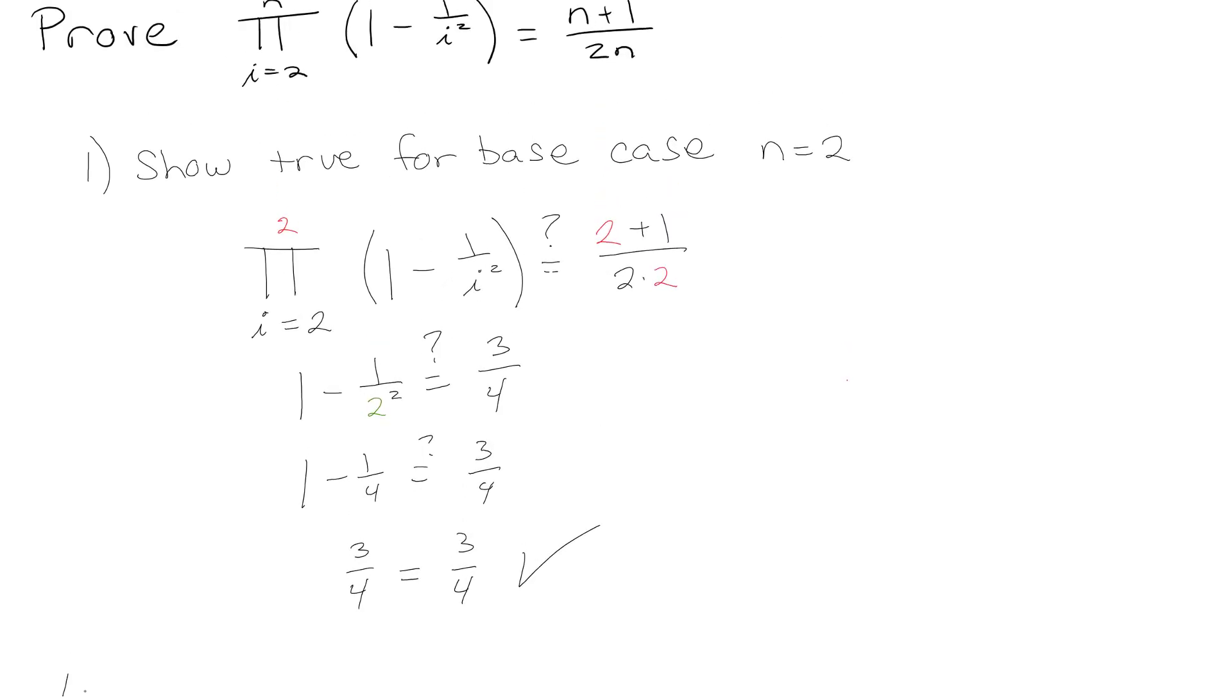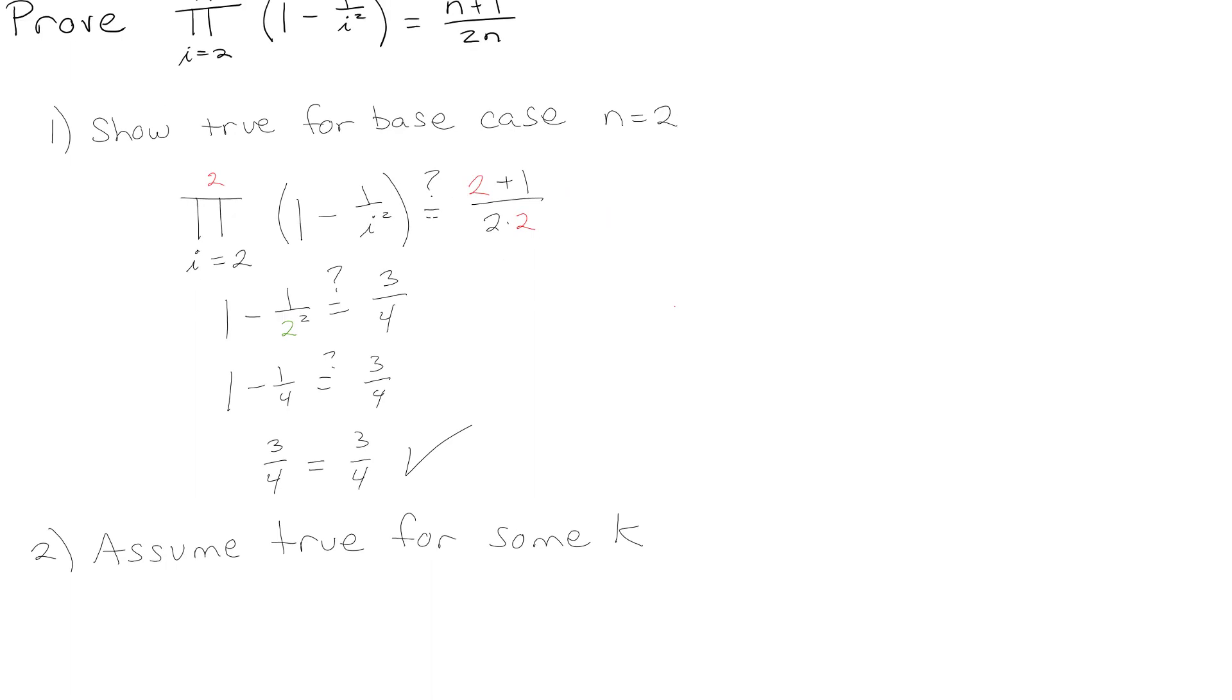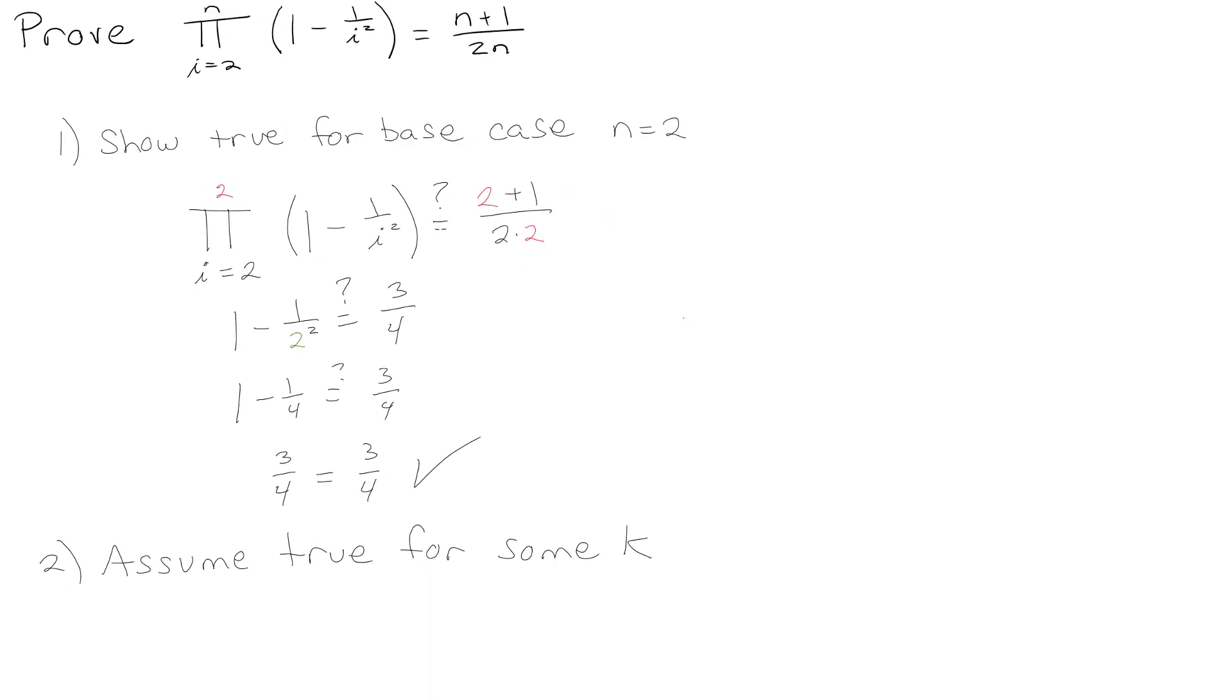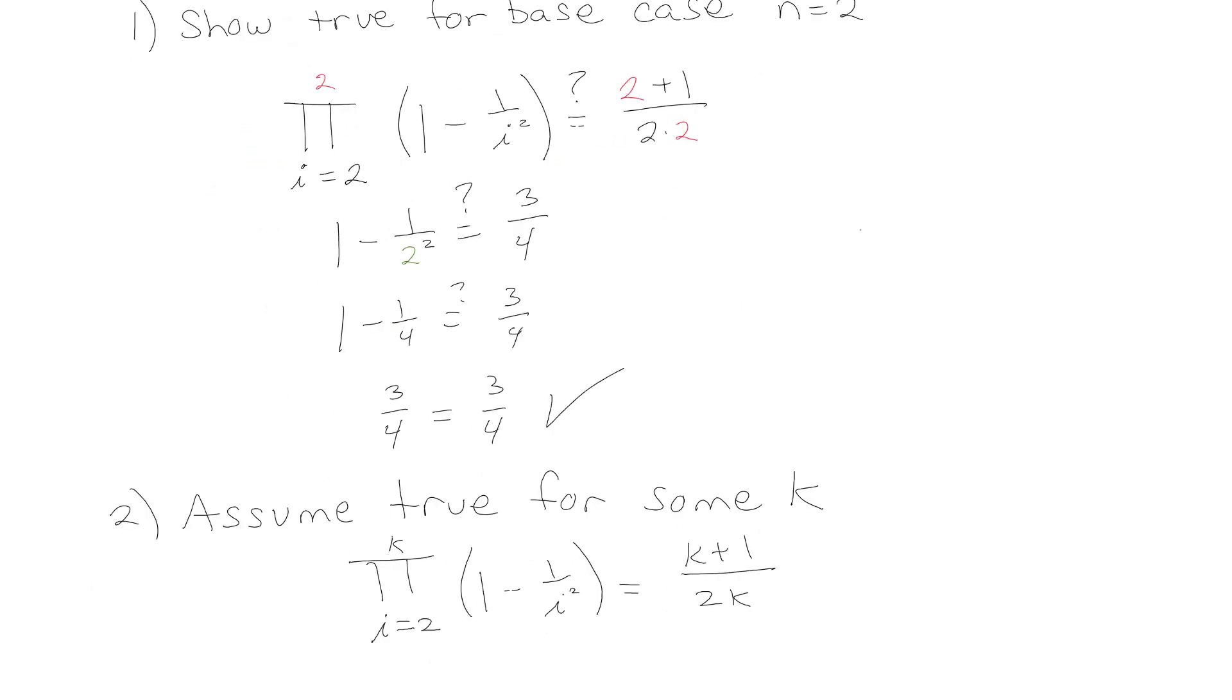Now what we want to do is assume it's true for k equals some k. In our case we're going to assume it's true that π going from i equals 2 to k of (1 minus 1 over i squared) is equal to (k plus 1) over 2k. So that's our assumption, we're going to just assume that's true.